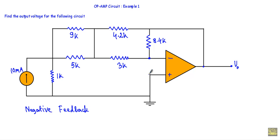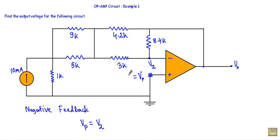Let the non-inverting terminal voltage be Vp and the inverting terminal voltage be V2. When an operational amplifier is in negative feedback, the non-inverting and inverting terminal voltages will be equal. Since this non-inverting terminal is connected to ground, Vp will be equal to zero, which will make V2 equal to zero volts.